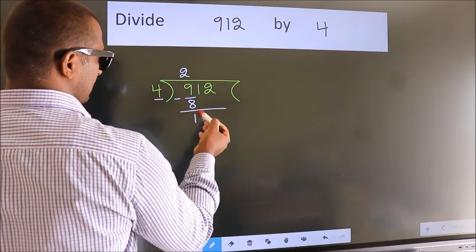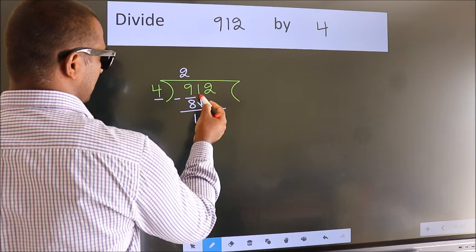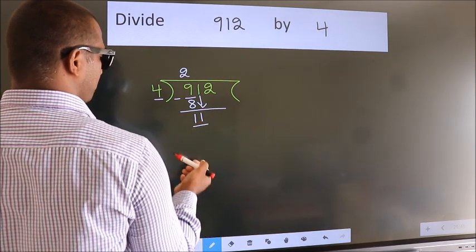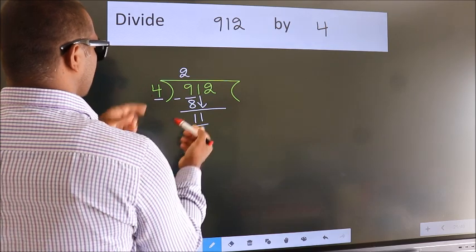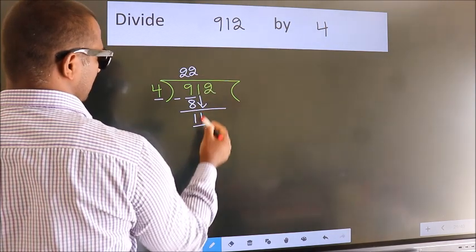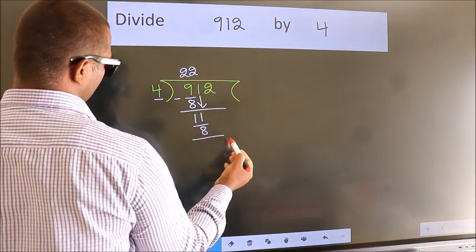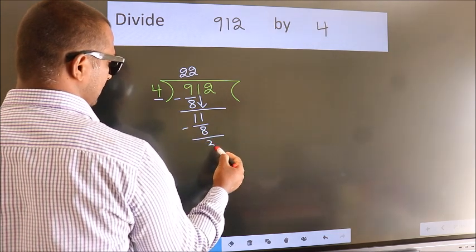After this, bring down the beside number. So, 1 down, 11. A number close to 11 in the 4 table is 4 twos, 8. Now, we subtract. We get 3.